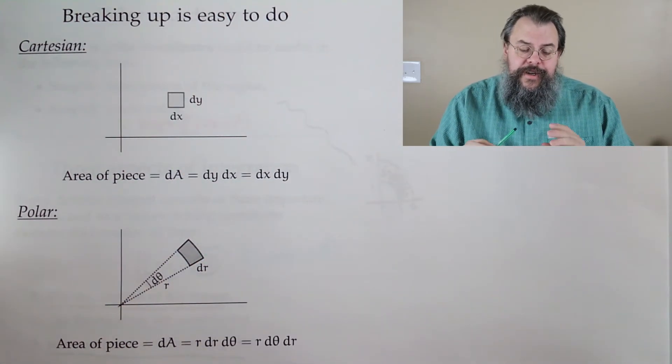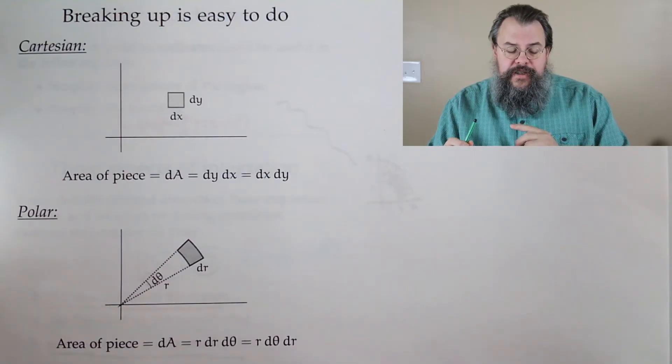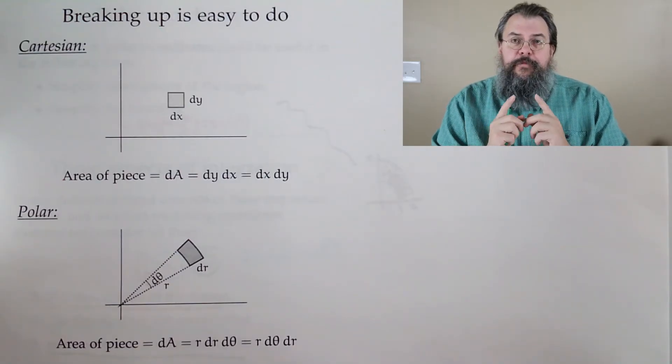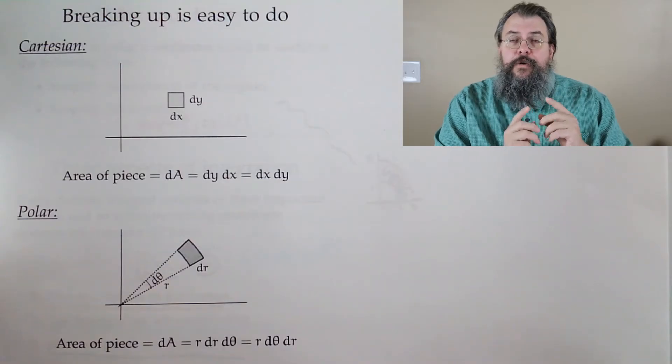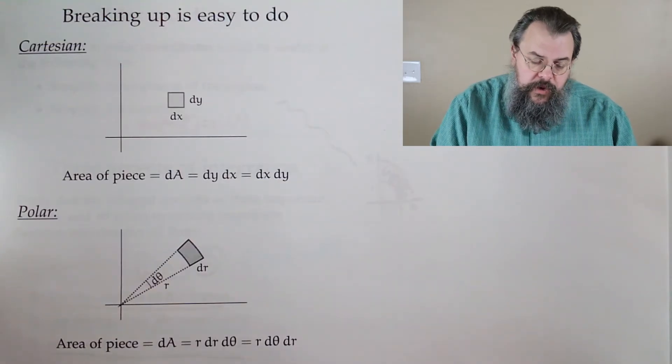Now polar, we have r and theta. So we've got to think about, okay, I'm perturbing r, I'm perturbing theta. What does that do?